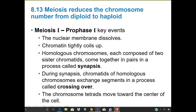Meiosis has two parts. They're always labeled with Roman numerals — meiosis I and meiosis II. In mitosis, we just had prophase, metaphase, anaphase, and telophase. In meiosis, we need a distinction, so we have prophase I and prophase II, metaphase I and metaphase II. Pay attention, because the Roman numerals are incredibly important.